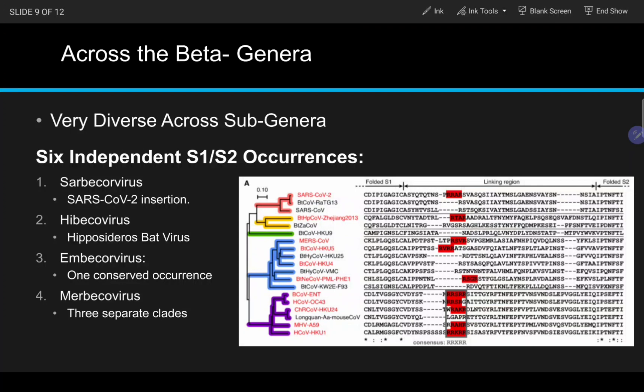In the Merbecovirus group, three separate clades exhibit S1/S2 cleavage sites, but sequence alignment demonstrates that each site is unique to their particular clade, meaning a likely independent origin for each individual clade.